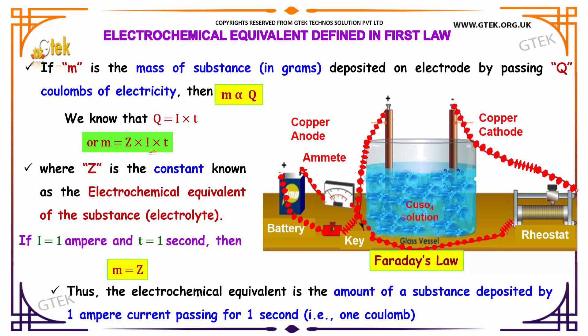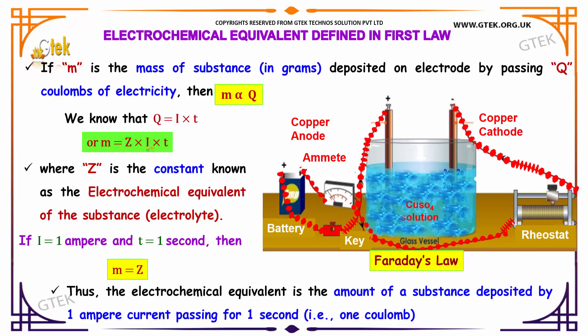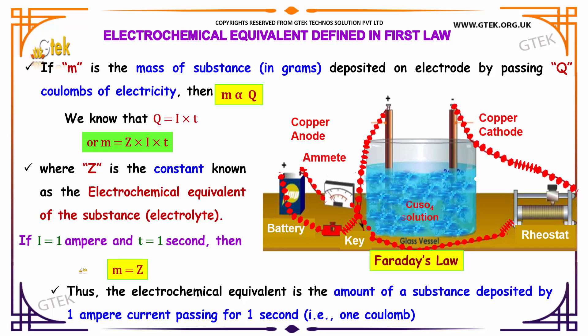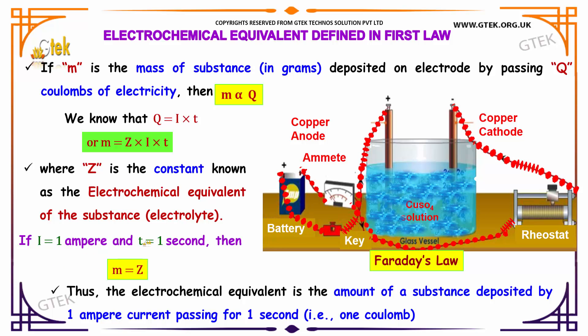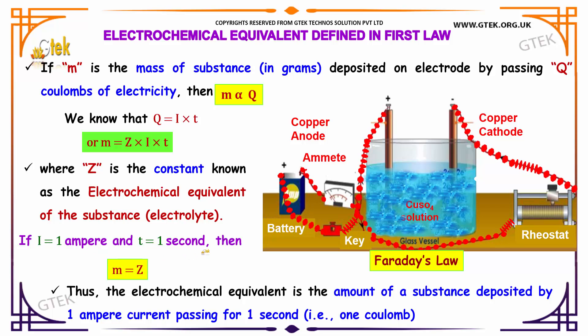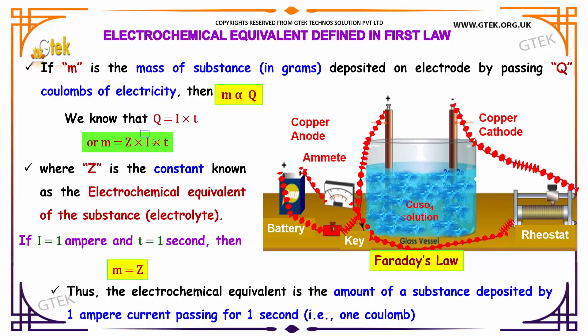If I equal to 1 ampere of current and t that is time equal to 1 second, then by substituting the value of 1 for the cases I and t, multiplying 1 will be getting m equal to Z.